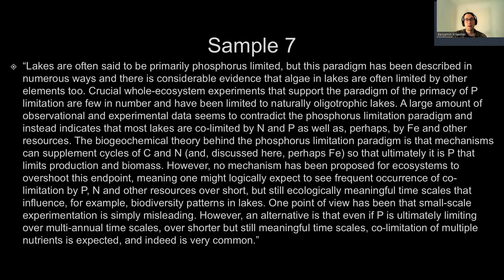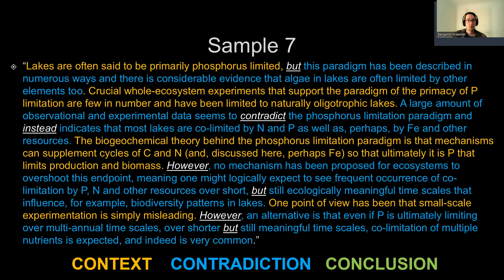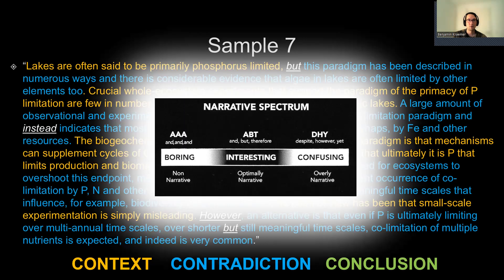This is the abstract from a paper called 'On the Phosphorus Limitation Paradigm for Lakes,' published in 2008. In the context-contradiction-conclusion framework, this sample has a lot of the first two — context and contradiction — but it doesn't have a conclusion. You'll notice the repeated use of words like 'but,' 'contradict,' 'instead,' and 'however.' This may jog your memory of the narrative spectrum — this is what we would call the 'despite, however, yet' style of writing, and it can be very confusing, especially for non-experts.